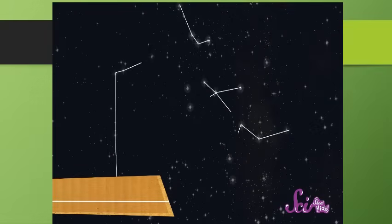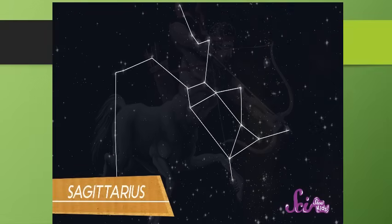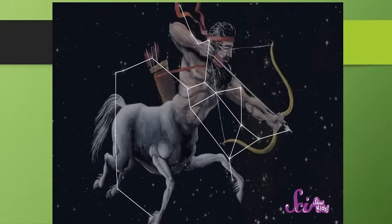Next, we also have a constellation that reminded ancient Greeks of a creature that was part man, part horse, shooting an arrow. The Sagittarius.